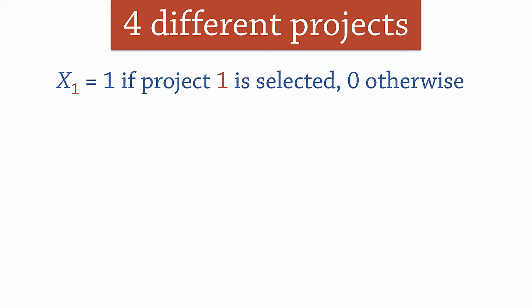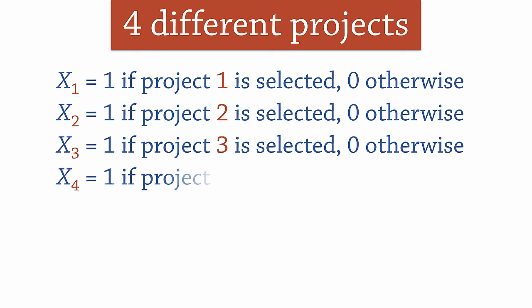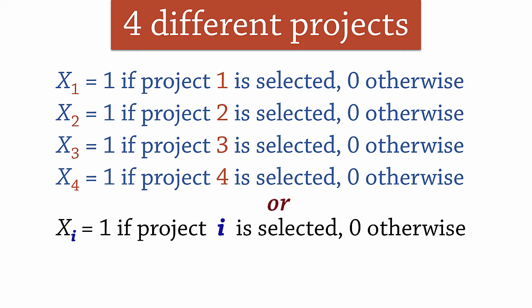For example, suppose we have four different projects to consider. We can either select a project or not select it. So for the first project, we can define the decision variables as follows: x1 equals 1 if project 1 is selected and 0 if not selected. We do the same for projects 2, 3 and 4 by defining x2, x3 and x4. Or we can simply write xi equals 1 if project i is selected and 0 if not selected, where i equals 1, 2, 3 and 4.